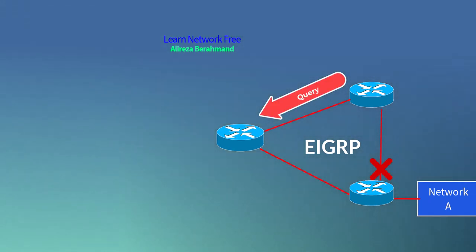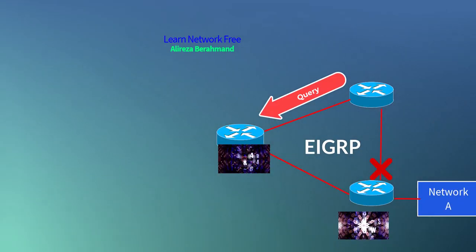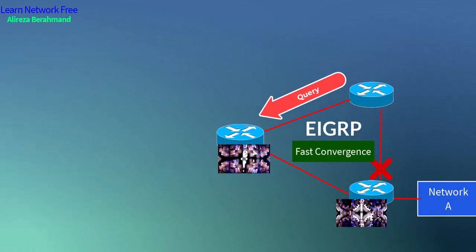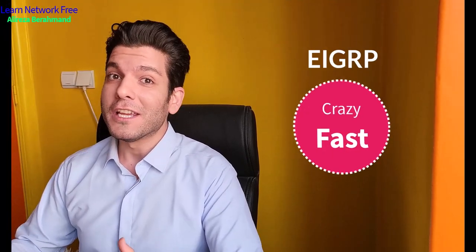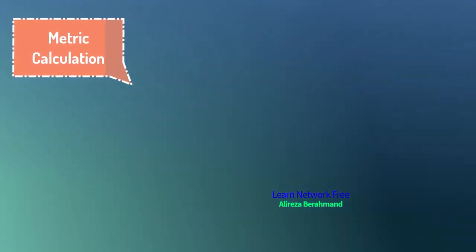Number one is the DUAL algorithm, which ensures consistent and loop-free routing decisions. DUAL allows EIGRP to quickly adapt to changes in the network topology by immediately recalculating routes when necessary. Because of this feature, EIGRP has very fast convergence — EIGRP is crazy fast.